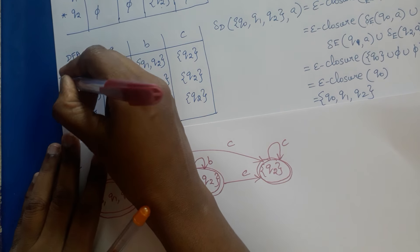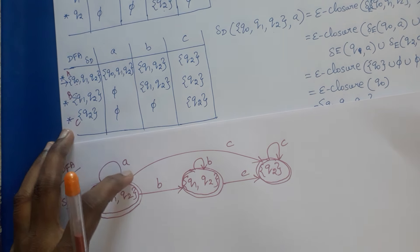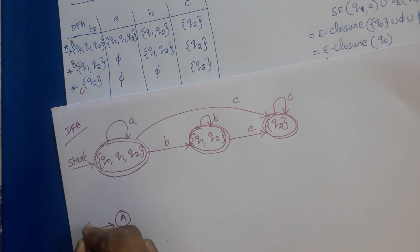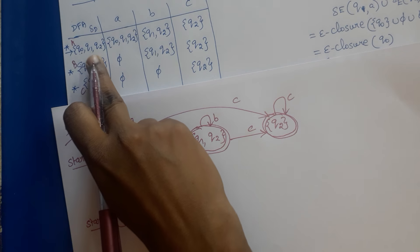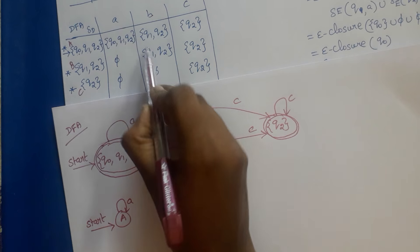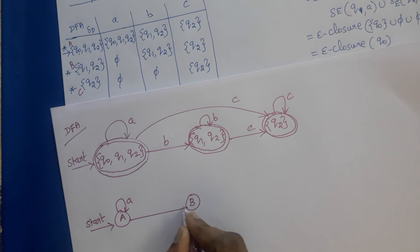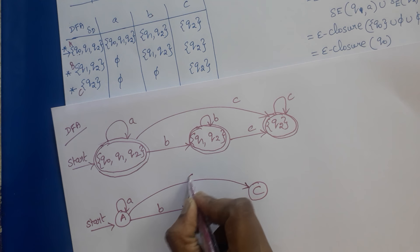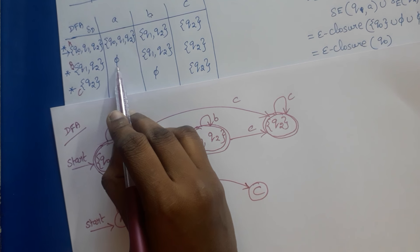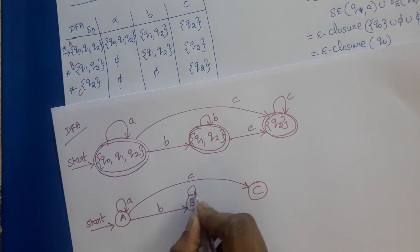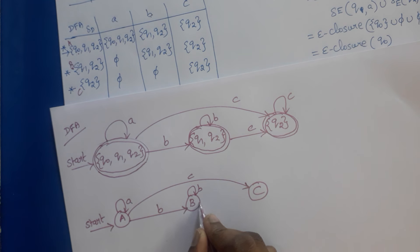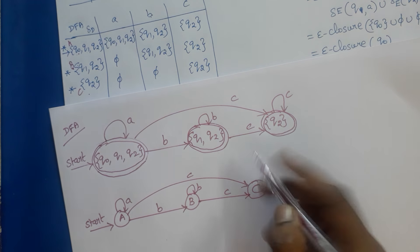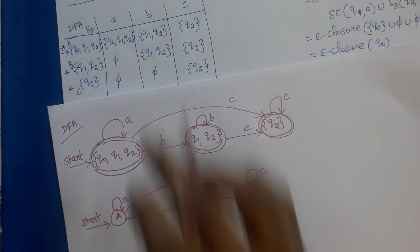We can rename the states. Let A represent {Q0, Q1, Q2}, B represent {Q1, Q2}, and C represent {Q2}. In the transition diagram: start state A, from A on input A goes to A, on B goes to B, on C goes to C. From B, no A transition, B goes to B, C goes to C. From C, no A or B transition, C goes to C. This is the final DFA diagram for the given epsilon NFA. Thank you.